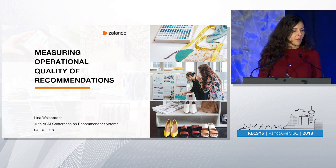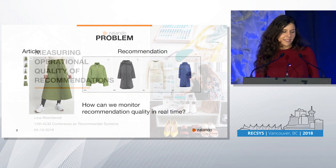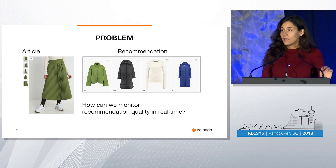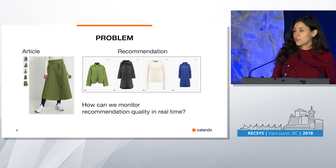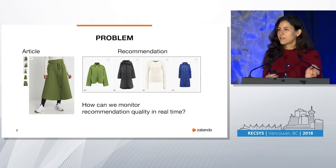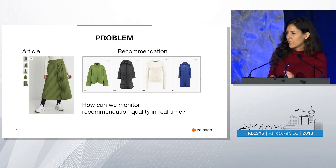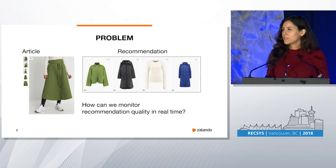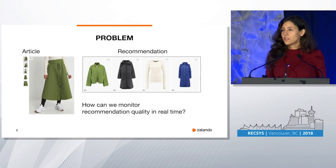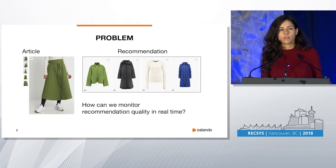My talk will be about measuring operational quality of recommendations. Let's say you have a recommender — this is an article detail page and it serves you some recommendations. Let's also say every night you update your model, for example you upload some new weights. What is actually happening to the quality of the recommendations that you deliver when you update the model? Can you tell online what happens to the quality in production when things around the model change? Can you alert on this in real time? This will be the topic of my talk today.